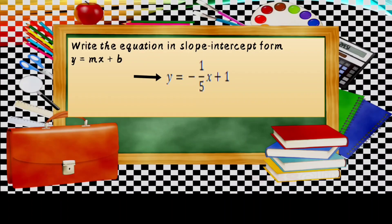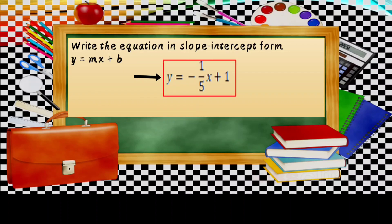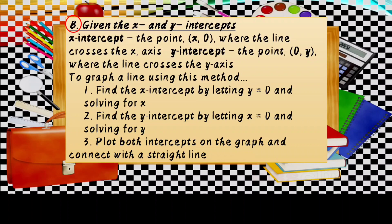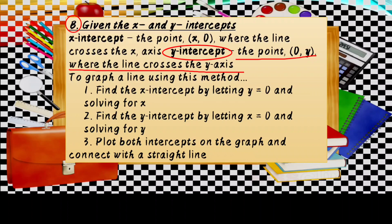Writing the equation in slope-intercept form Y equals MX plus B, the answer is Y equals negative 1 over 5 times X plus 1. Letter B: given the X and Y intercepts. The X-intercept is the point (X, 0) where the line crosses the X-axis; the Y-intercept is the point (0, Y) where the line crosses the Y-axis. To graph a line using this method: number 1, find the X-intercept by letting Y equal 0 and solving for X; number 2, find the Y-intercept by letting X equal 0 and solving for Y; number 3, plot both intercepts on the graph and connect with a straight line.